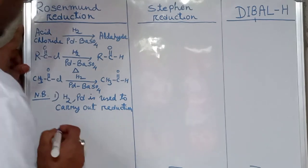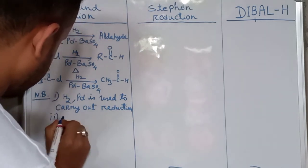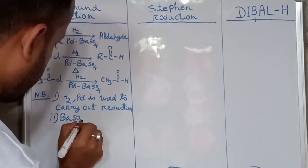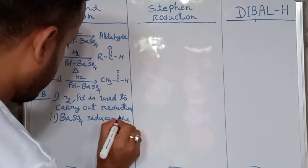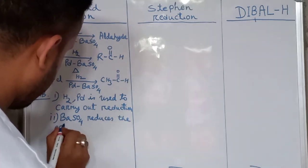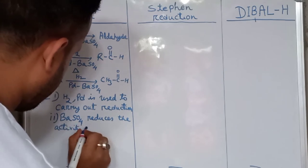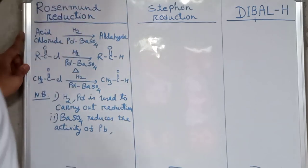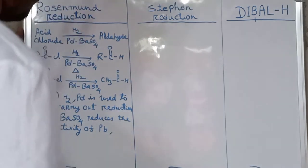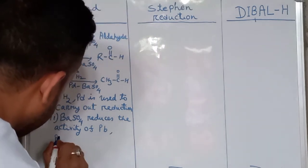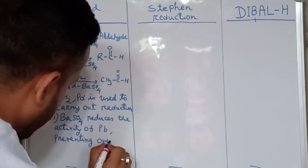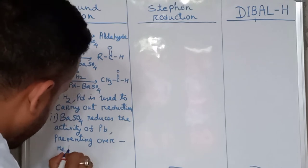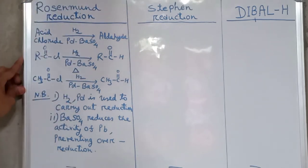Number two: barium sulfate reduces the activity of palladium, meaning barium sulfate limits the reduction, preventing over-reduction. This limits the reduction; otherwise it will give hydrocarbon.